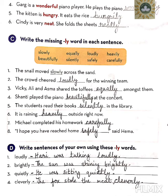Number two: the crowd cheered loudly for the winning team. Number three: Wiky, Ali and Asma shared the toffees equally amongst them — they divided the toffees equally.